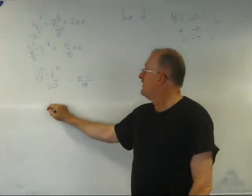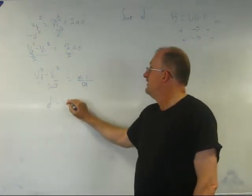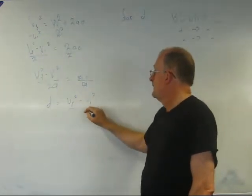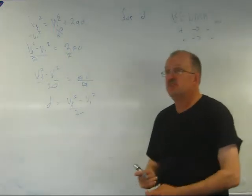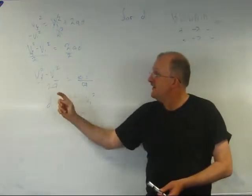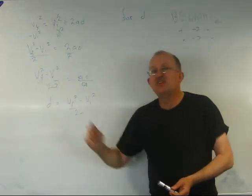Now I'm going to put the d on the left-hand side. d equals Vf squared minus Vi squared all over 2a. Remember, we have to do it to the whole other side. So we put that line under both the Vf squared and the Vi squared.